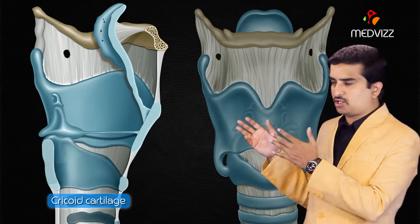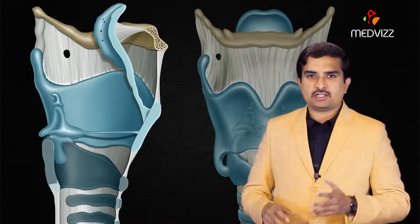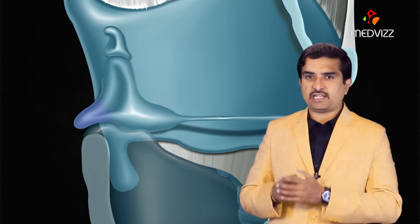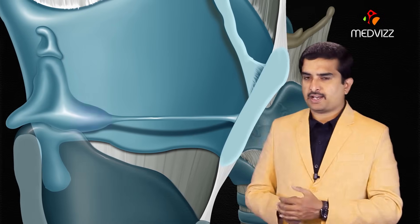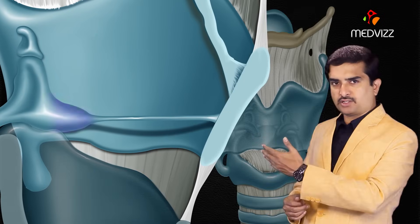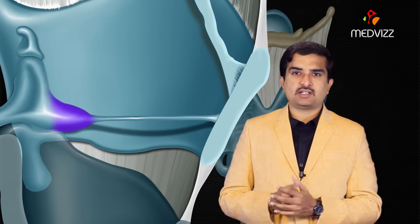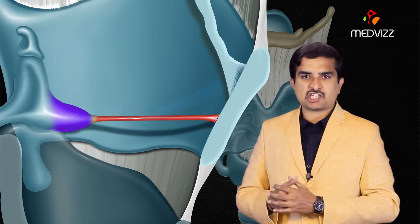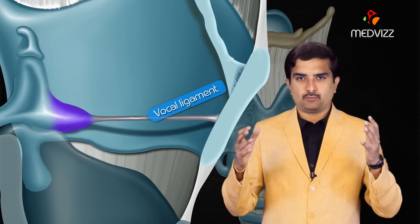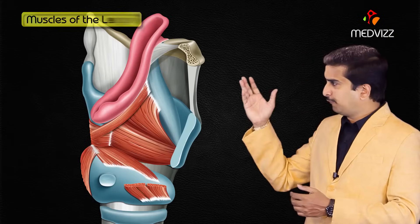The arytenoid cartilages are pyramidal cartilages that articulate at their base with the lamina of the cricoid cartilage. The muscular process extends laterally and provides attachment points for muscles. The vocal process extends anteriorly and is the attachment point for the vocal ligaments.